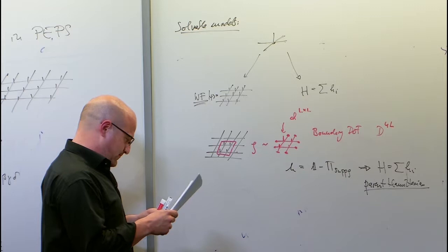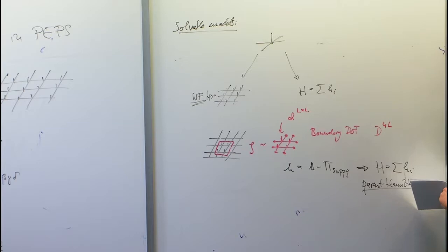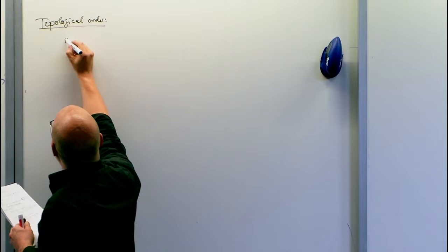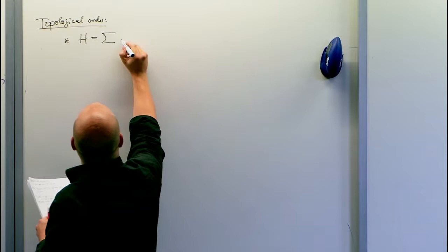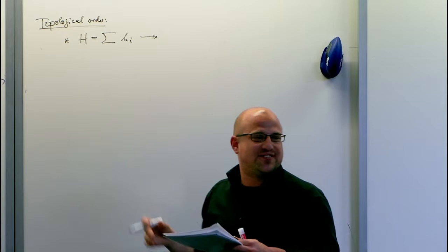What is topological order? There are different ways to define it; I'll stick to one example — the toric code — which is the simplest example illustrating the basic ideas. The Hamiltonian should have a degenerate ground space whose dimension depends on the topology. It may also have excitations with interesting statistics — anyonic — meaning you cannot create them individually, you have to create them in pairs, and moving them around each other gives interesting phases or even non-abelian behavior.